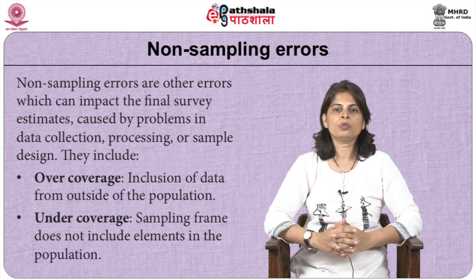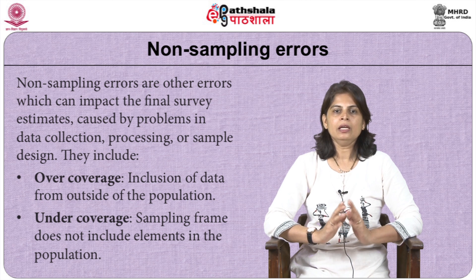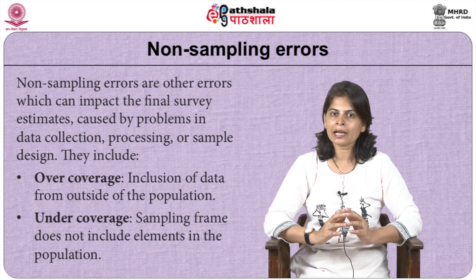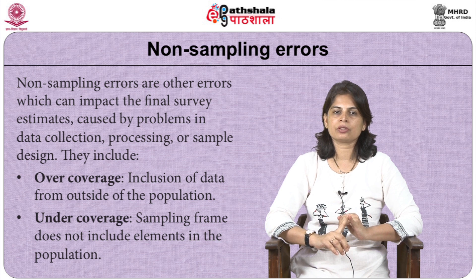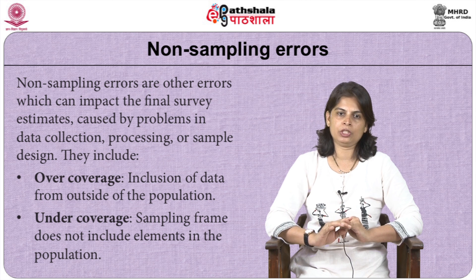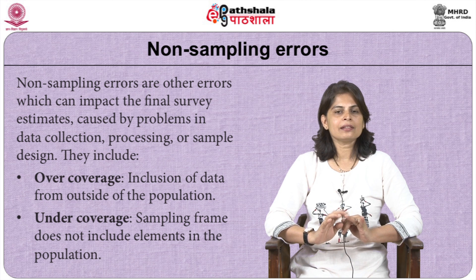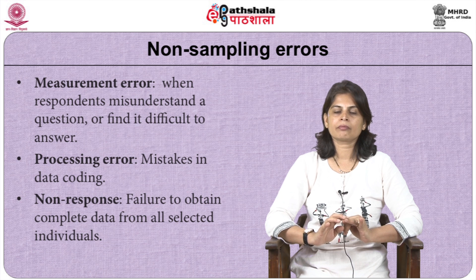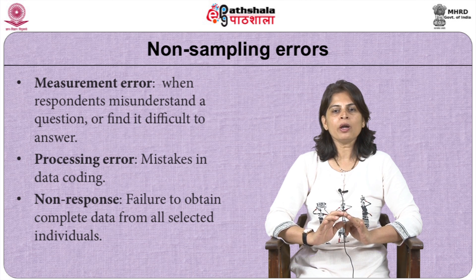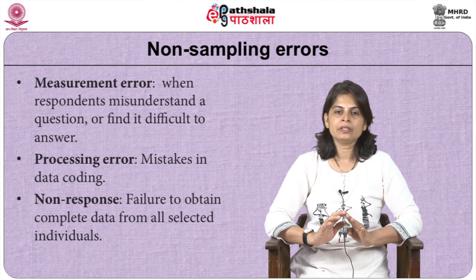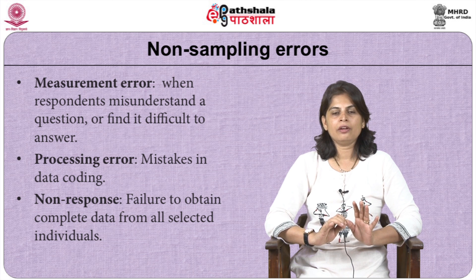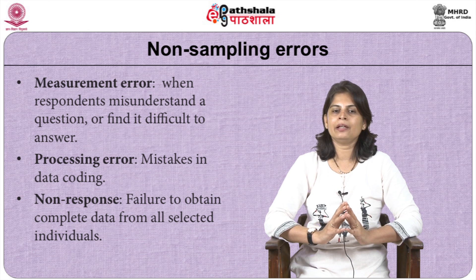Non-sampling errors are other errors which can impact the final survey estimates, usually caused by problems during data collection, processing, or sample designing. These include: first, over coverage — inclusion of data from outside the population; second, under coverage — the sampling frame does not include elements in the population; third, measurement error — respondents misunderstand or find it difficult to answer a question; fourth, processing error — mistakes in data coding or data entry; and finally, non-response — failure to obtain complete data from all selected individuals in the sample.